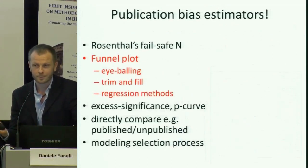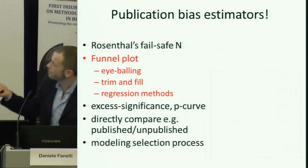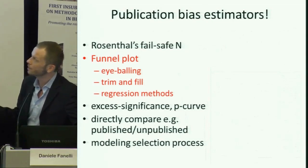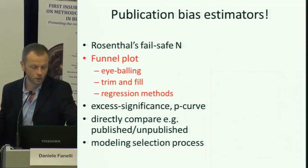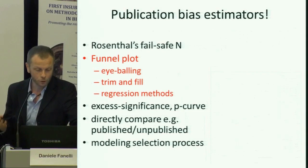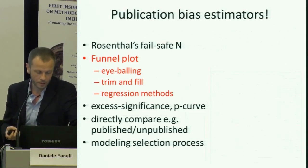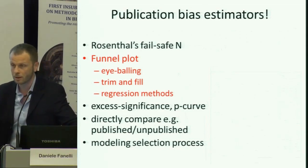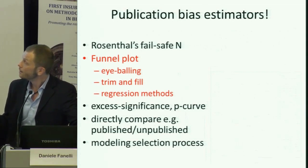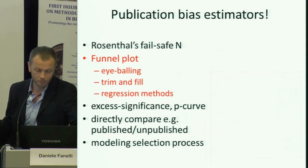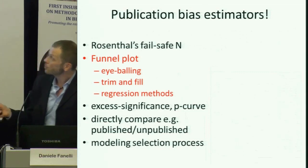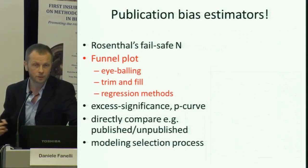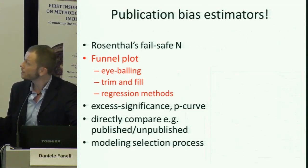Meta-analysis and publication bias as concepts in a methodological sense have grown together. Rosenthal, in that paper I mentioned, was the first to propose a way to estimate what he coined as the file drawer problem. Since then there have been several important developments around how to best try to measure the amount of bias and correct for it. The most important ones are the so-called funnel plot tests, or tests based on the idea of a funnel plot, which is what we'll see in a second.